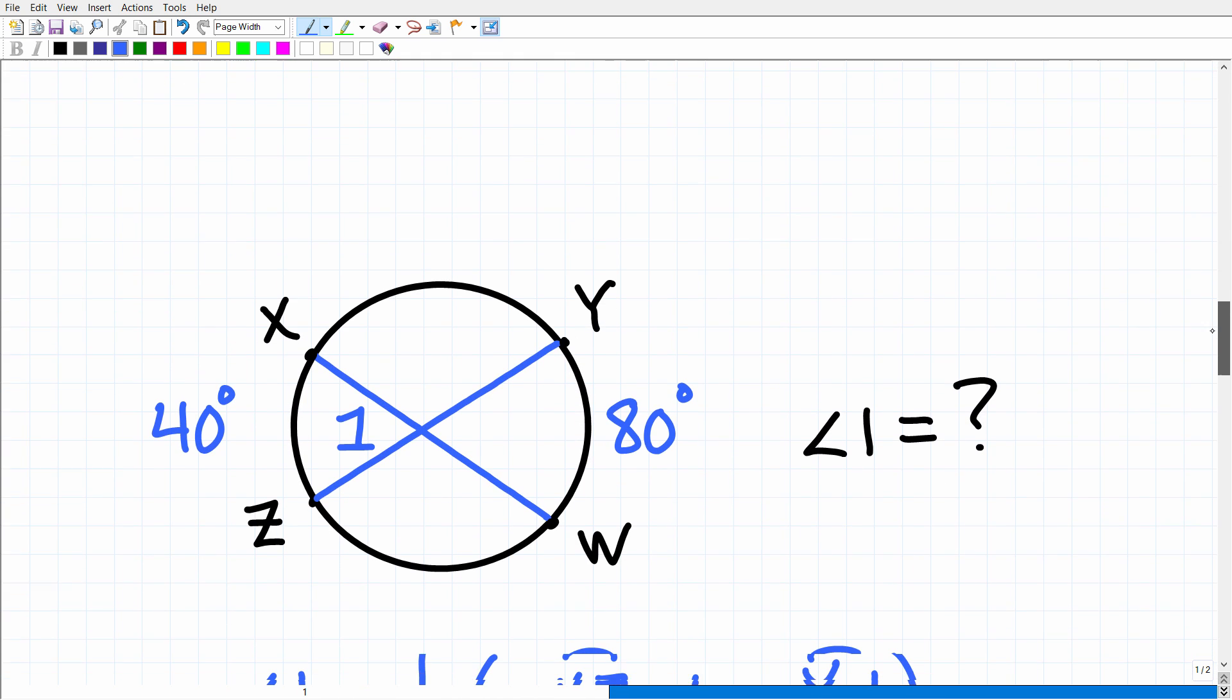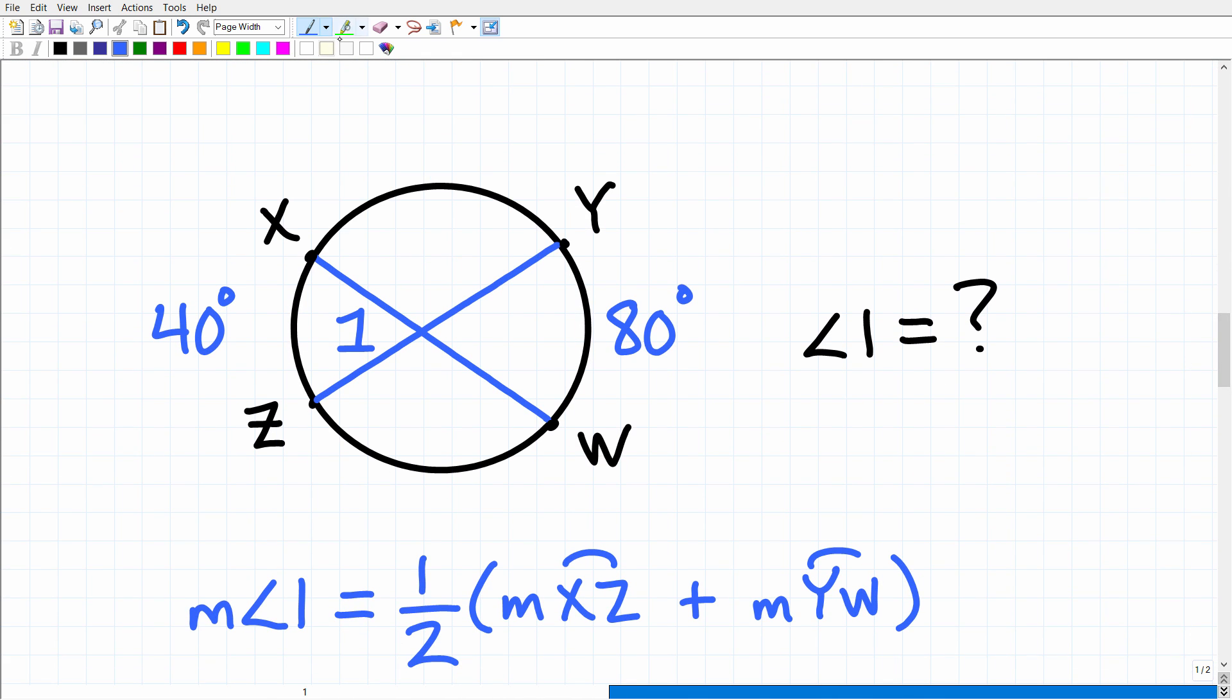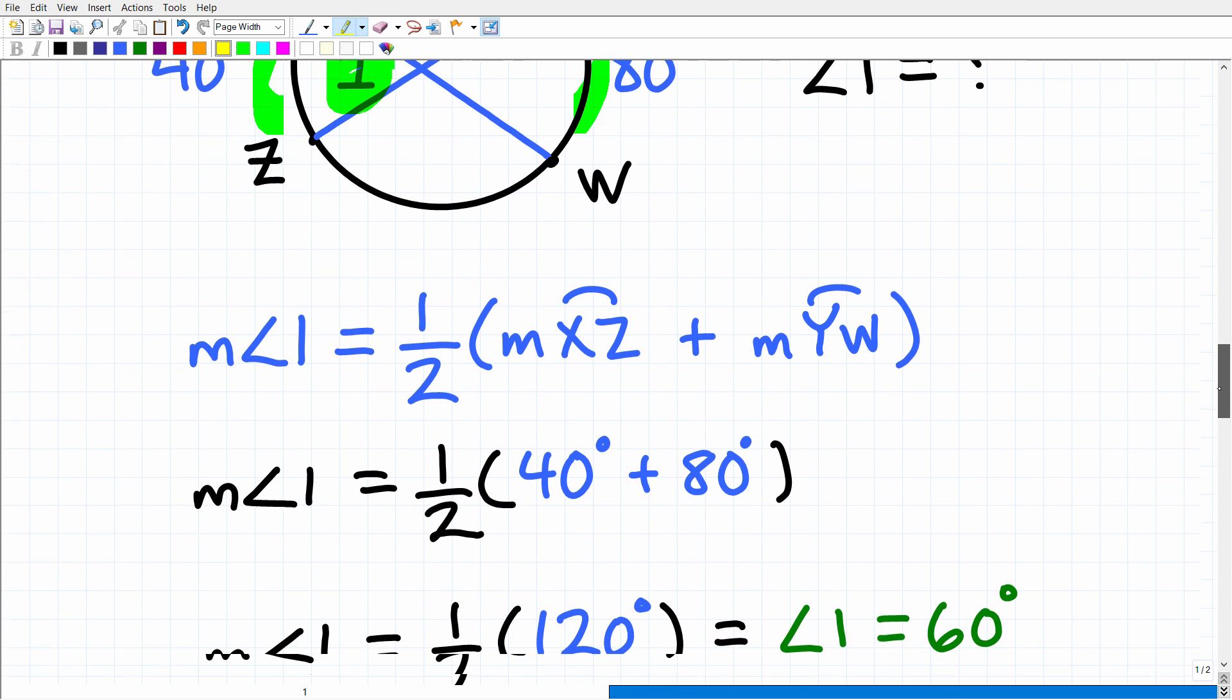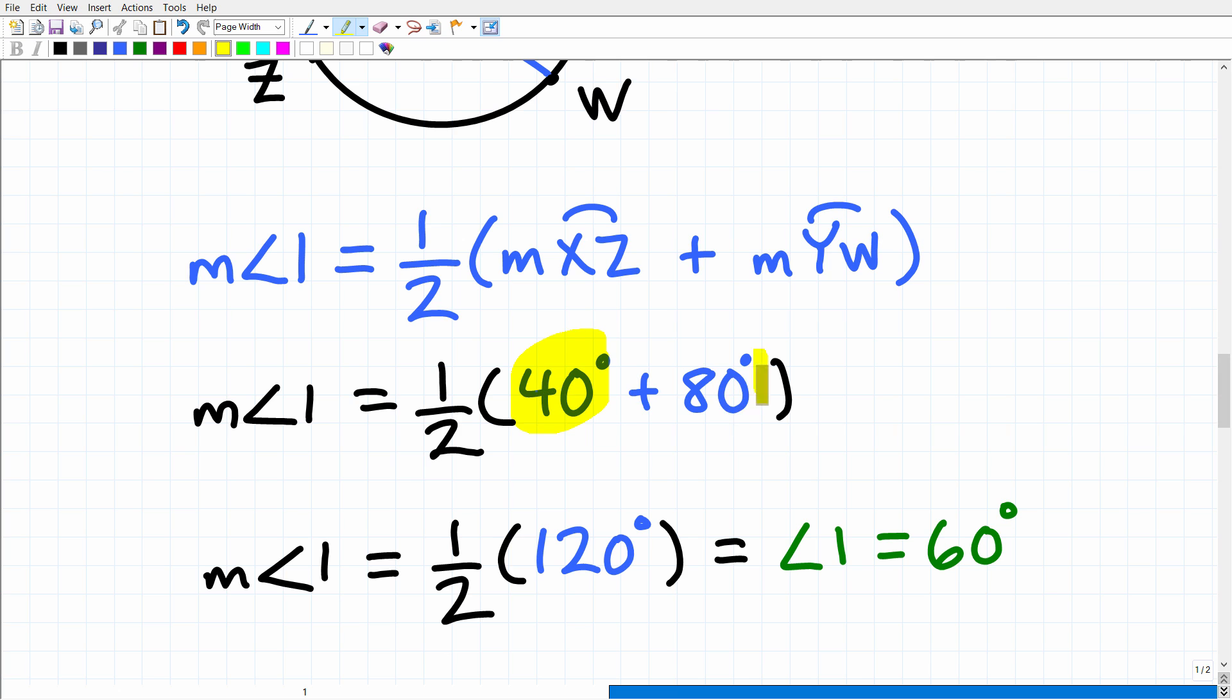So let's go and finish this problem up. Again, we have the right formula. All we need to do is simply add up these two arcs right here, 40 and 80, and find 1 half of that, and we'll get this angle right there. So pretty straightforward stuff. So 40 degrees plus 80 degrees, of course, 120 degrees. One half of that is 60 degrees. So angle 1 is equal to 60 degrees.